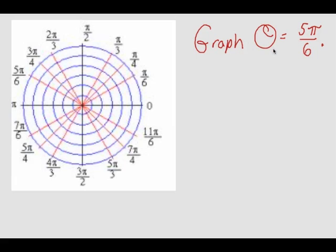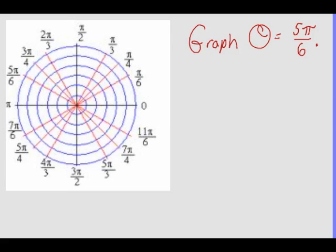If I'm graphing θ = a particular rotation, in this case, 5π/6, this says, who cares what the radius is? The angle of rotation will always be 5π/6. And what that's going to look like is, rotate 5π/6. And what we're going to have is a line. So no matter what my radius is, 0.5, 1, 3, the angle of rotation is 5π/6. Now notice, it's a line. So it extends forever in this direction and forever in this direction.